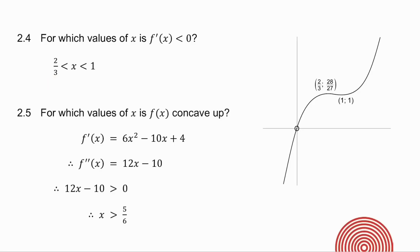2.5, for which values of x is f of x concave up? Now remember, concave up, your second derivative is positive. So I get the second derivative, I make it greater than 0, and I get that x must be greater than 5 over 6. Have a look at your graph, does that make sense? Well, 5 over 6 is between the two turning points, and from there on, my graph is concave up.